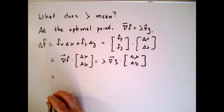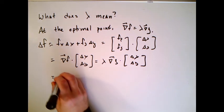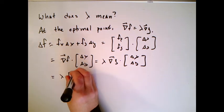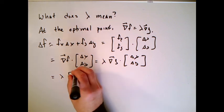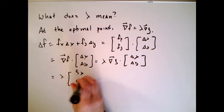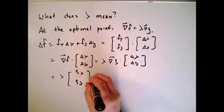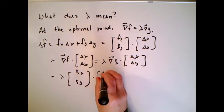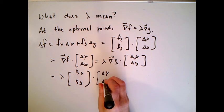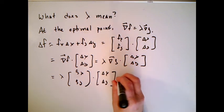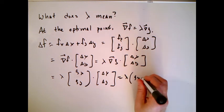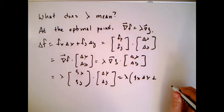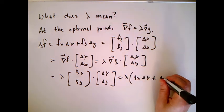I'm going to write the gradient of g full out. So I get lambda, this is going to be gx, gy dot delta x, delta y. I'm going to take that dot product out and multiply it out. I'm going to get gx delta x plus gy delta y.